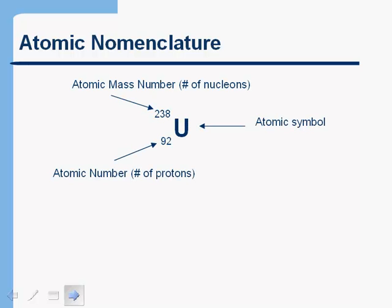Oftentimes when we want to write down an atom, we like to be able to write it in a way that we can see how many neutrons and protons the atom has. And this is how we do it. When we write down an element with this atomic nomenclature, first we put the letter that represents the atomic symbol.